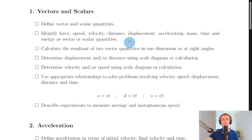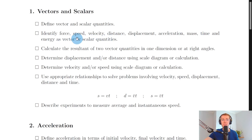The scalars — the ones that only have a magnitude — are speed, distance, mass, time and energy, whereas the vector quantities are force, velocity, displacement and acceleration.